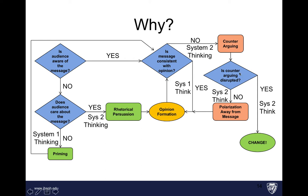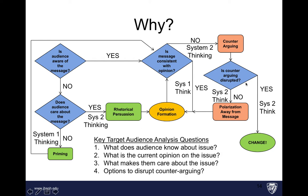If, however, you are successful in disrupting counter-arguing, you can actually achieve some sort of longer-term behavior change. Where we need to focus in influence operations is on counter-arguing and how to effectively breach or disrupt it. Before we get there, we have four key target audience analysis questions: what does the audience know about an issue, what is their current opinion, what makes them care, and then thinking about options to disrupt counter-arguing.